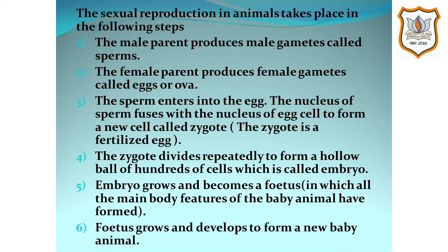The sexual reproduction in animals takes place in the following steps. First, the male parent produces male gametes called sperms. The female parent produces female gametes called eggs or ova. The sperm enters into the egg, and the nucleus of the sperm fuses with the nucleus of the egg cell to form a new cell called zygote.